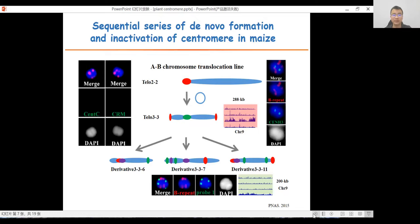In a derivative of maize A-B chromosome translocation line, we found a mini-chromosome TELO3-3 without the kinetic centromeric satellite CentC and centromeric retrotransposon CRM1 repeats. However, the epigenetic marker CENH3 signal can be detected in this mini-chromosome, suggesting a de novo centromere formed on an ectopic location on the chromosome.